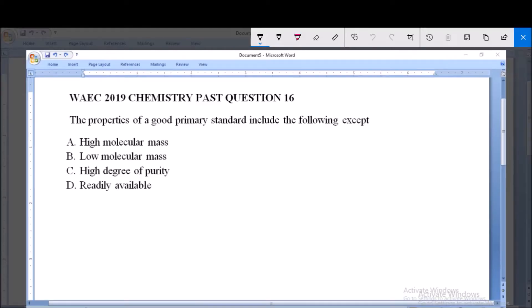I'm going to be answering WAEC 2019 chemistry past question and this is question 16. The properties of a good primary standard include the following except: A. High molecular mass, B. Low molecular mass, C. High degree of purity, D. Readily available.